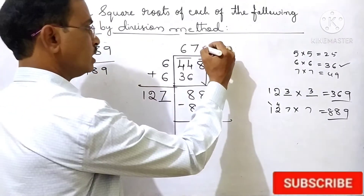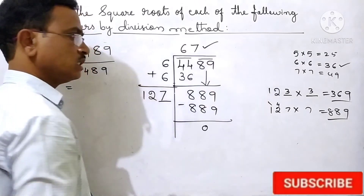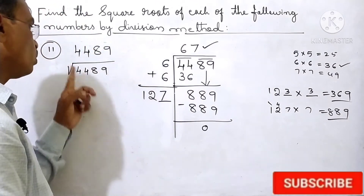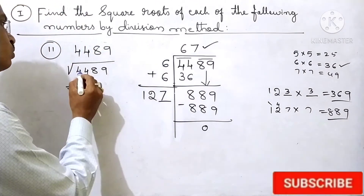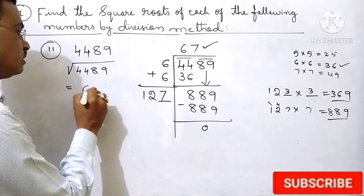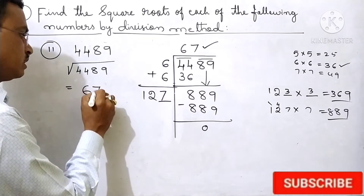So the answer is 67. Therefore, the square root of 4489 is 67.